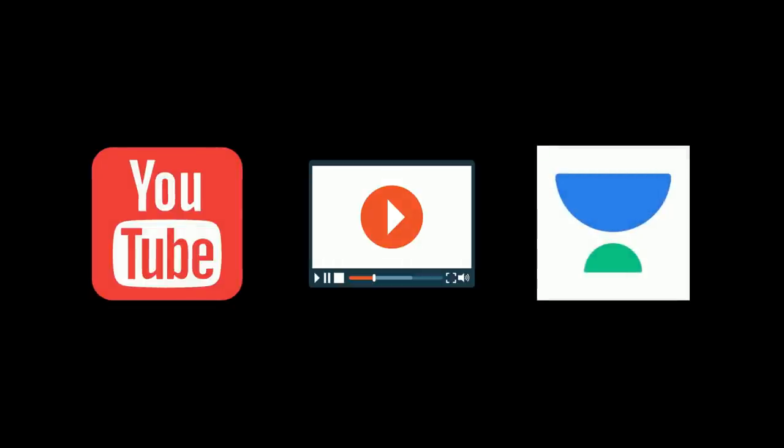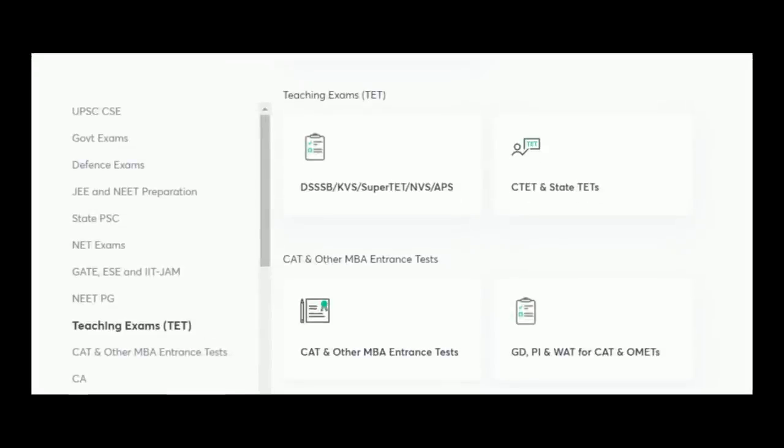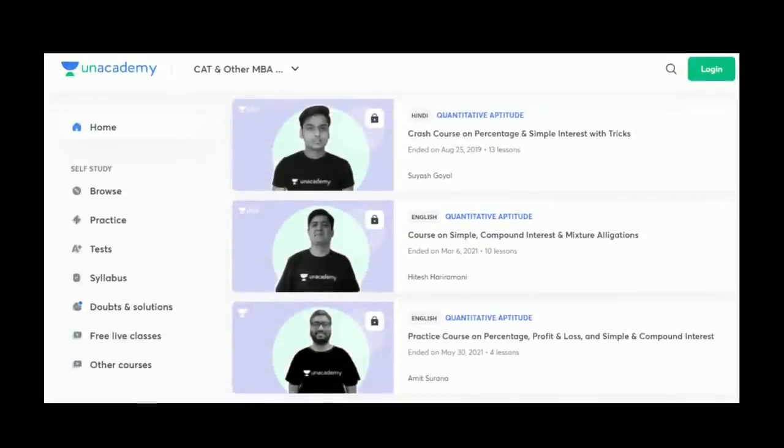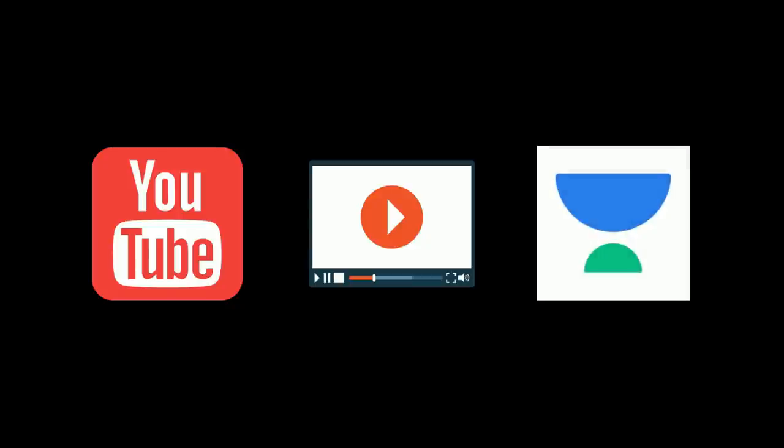Second resource that you can use for concept clarity are free videos that are available either on YouTube or on platforms like Unacademy. So for example if you go to Unacademy's website and select the goal CAT you would see that there are tons of videos in there which are available for free. Just type the name of the chapter that you are solving. For example if it's simple interest just go and type simple interest and you will find free videos available and you can clear your concepts using that. So these are the two resources that you must use before you start solving questions in any of the chapters because concept clarity is a must in the quant section.